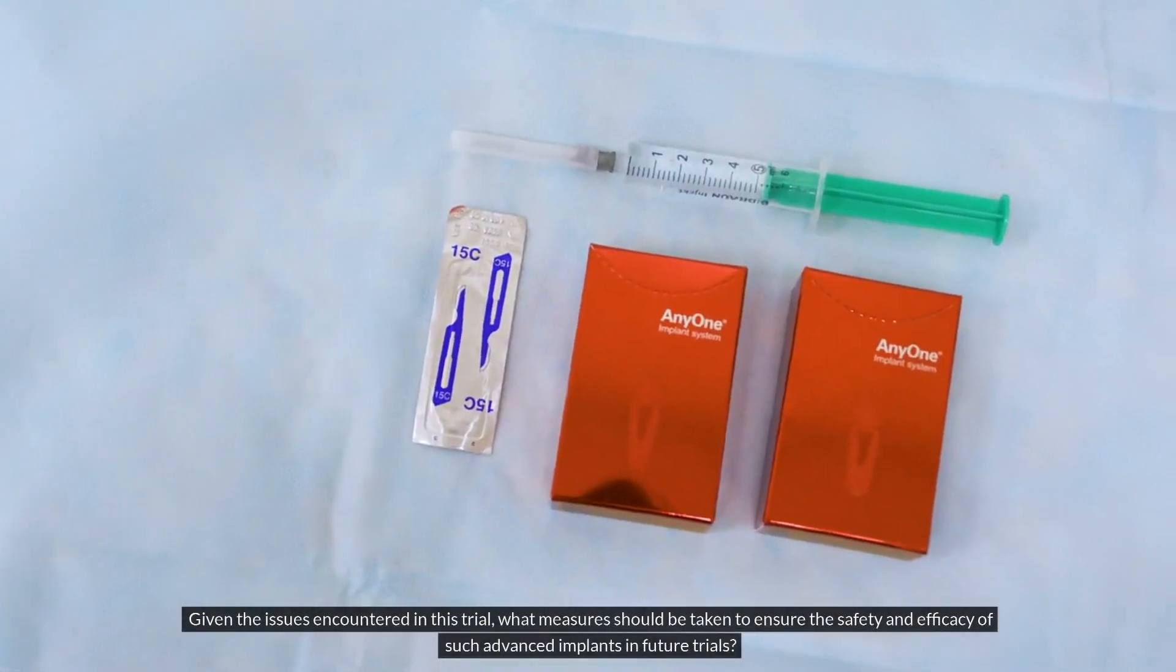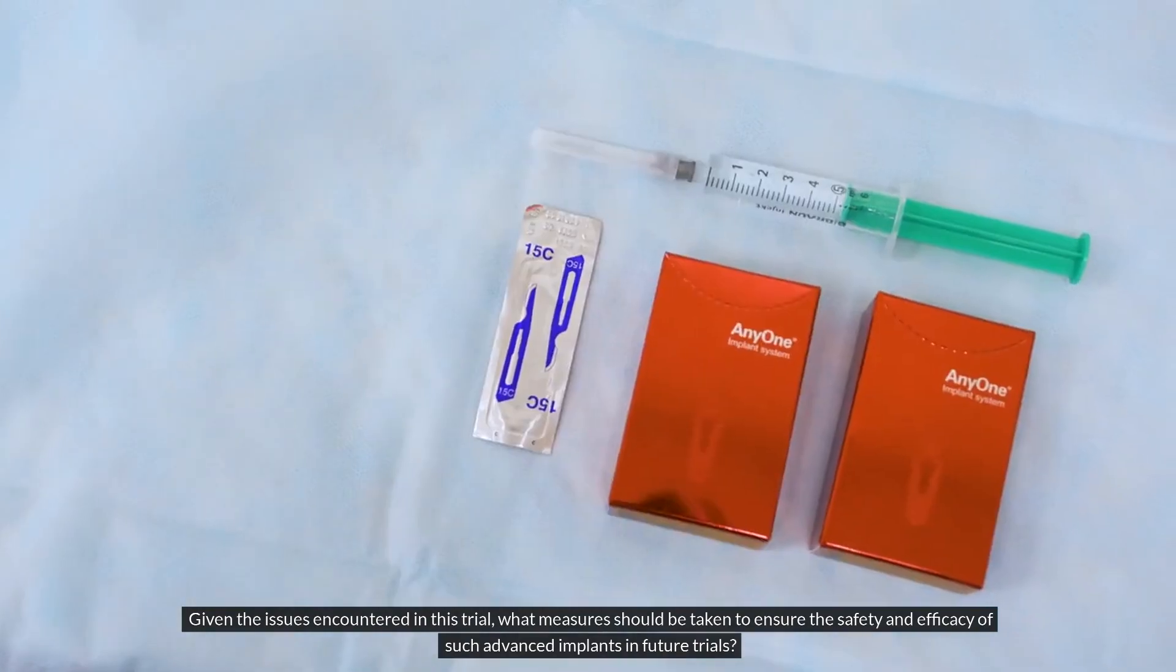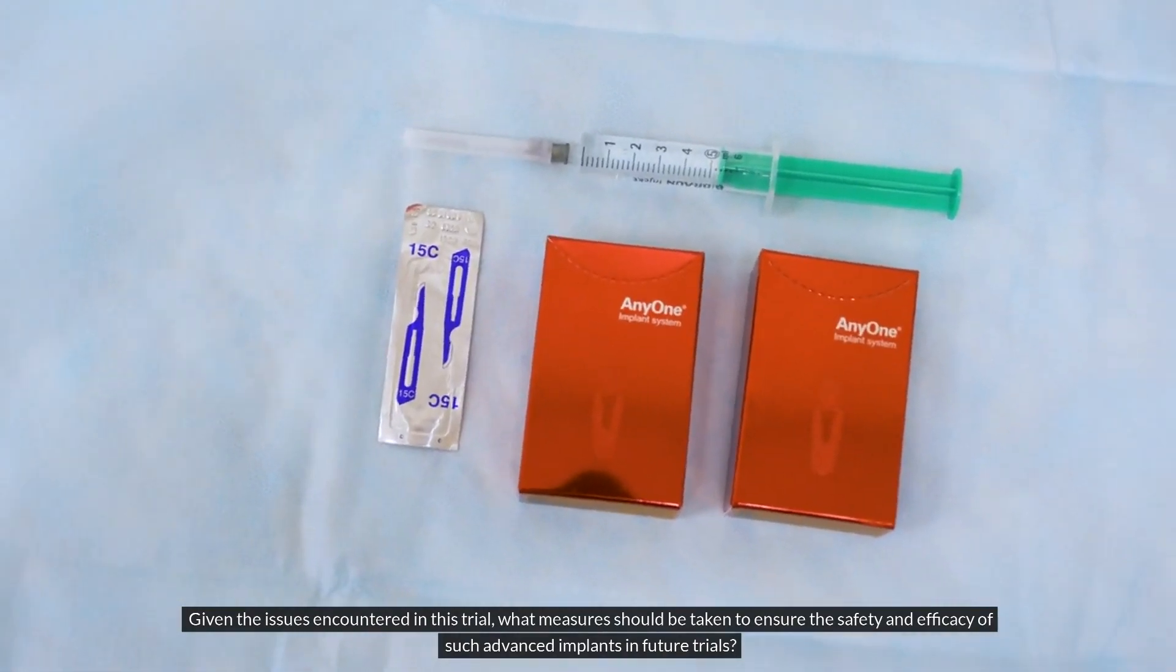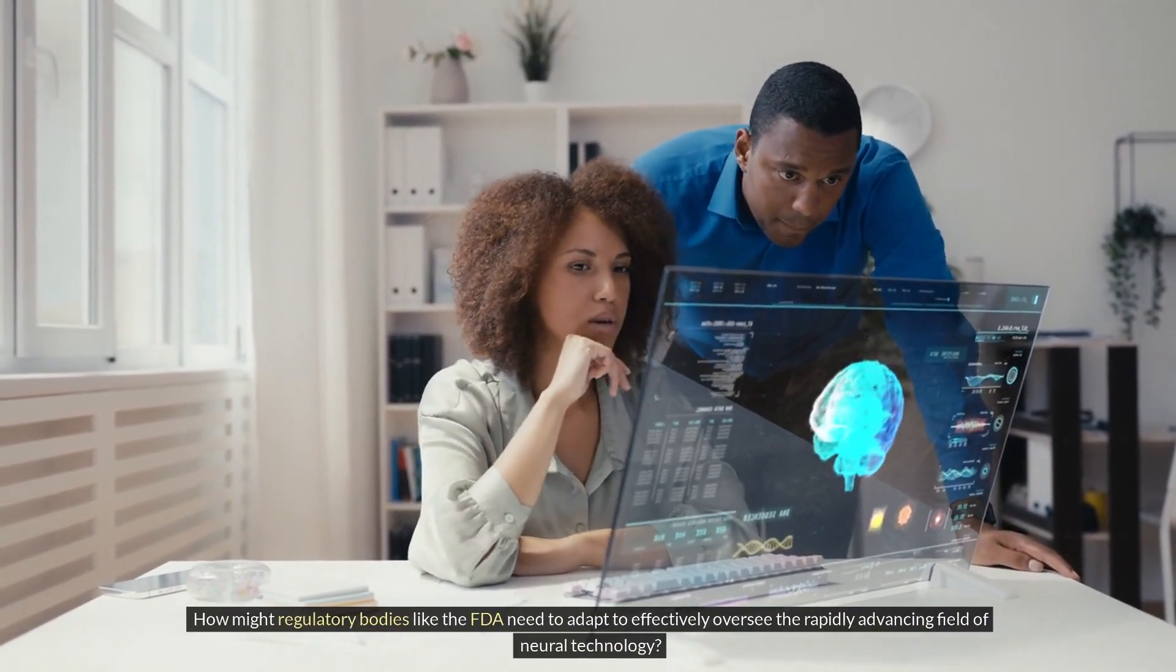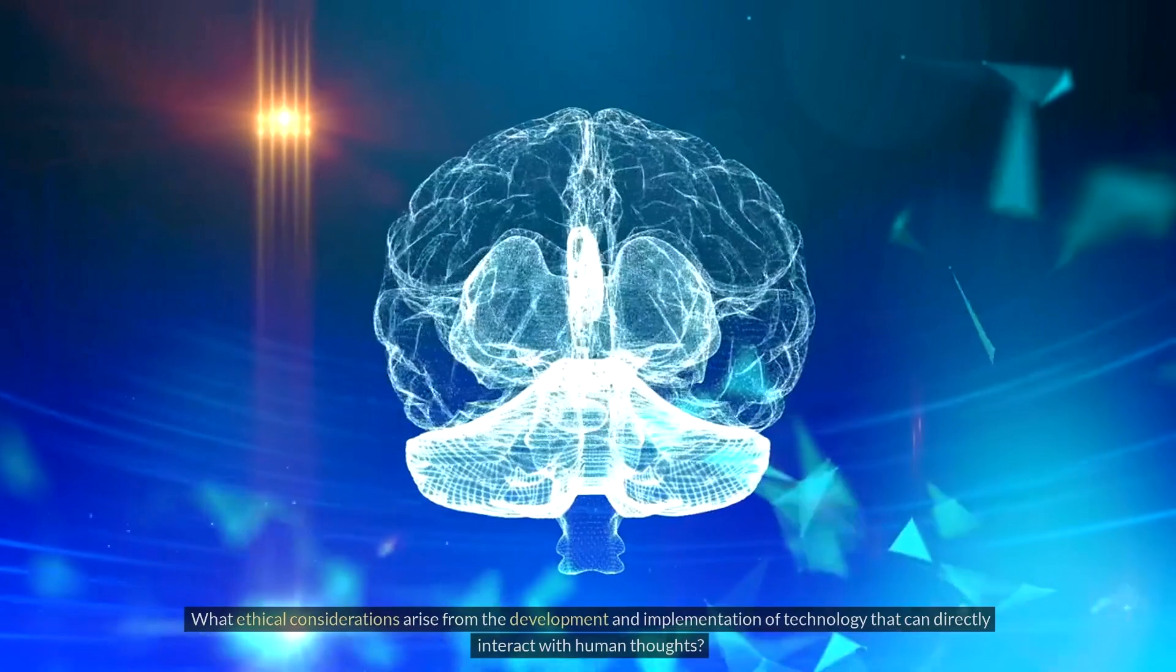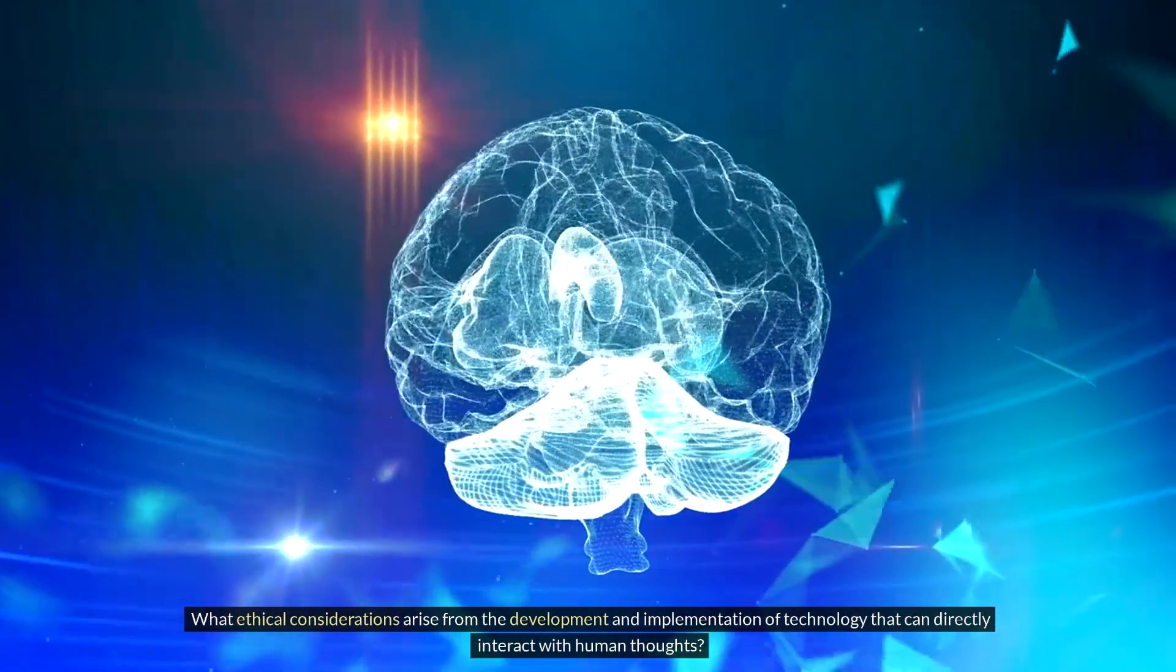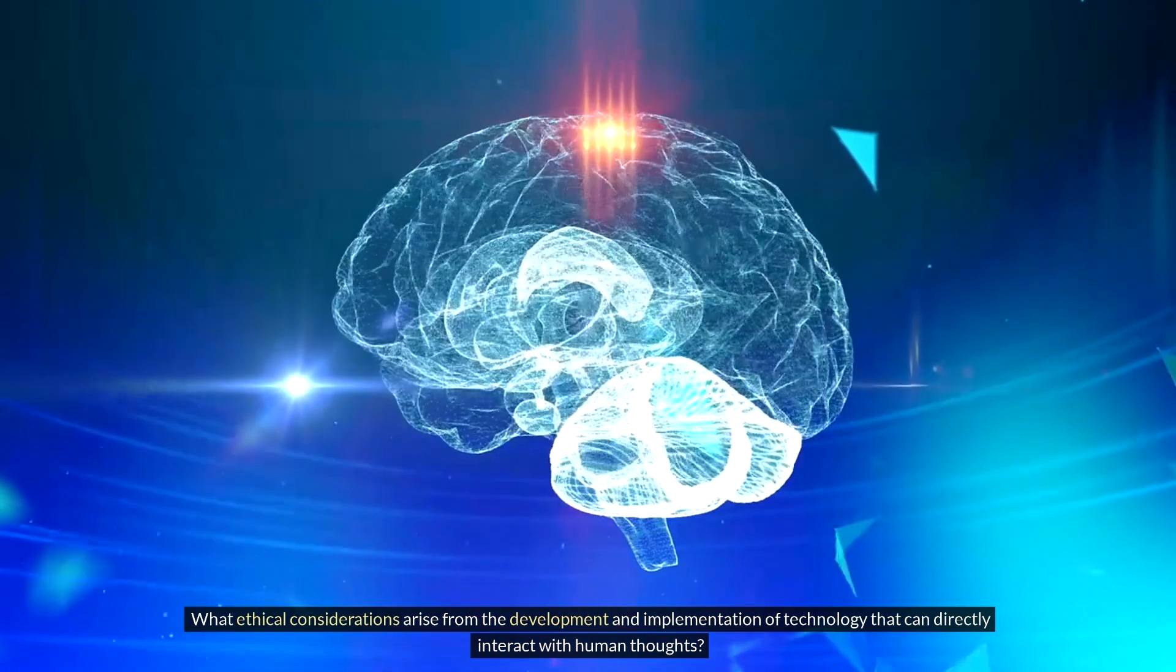Given the issues encountered in this trial, what measures should be taken to ensure the safety and efficacy of such advanced implants in future trials? How might regulatory bodies like the FDA need to adapt to effectively oversee the rapidly advancing field of neural technology? What ethical considerations arise from the development and implementation of technology that can directly interact with human thoughts?